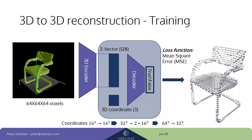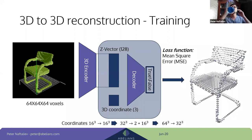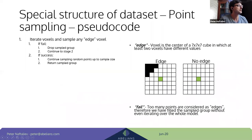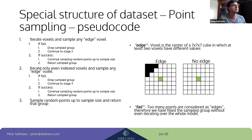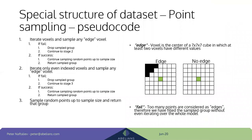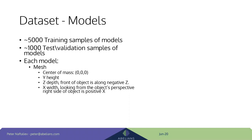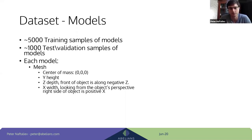Follow-up question: since we sample points closer to mesh edges, does the model generalize to points far from the mesh? The edge-focused sampling is used both at training and test time — the same sampling algorithm applies to the test set as well. There's no training involved in the sampling itself; it's a discrete algorithm, so it's fine to apply the same way at inference.